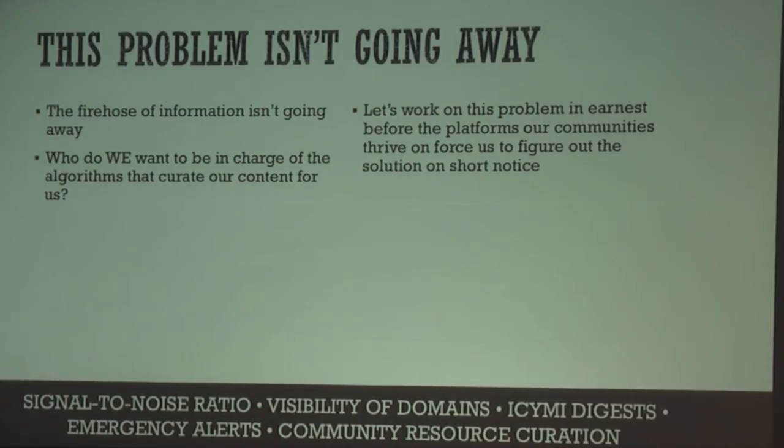Going back to the signal-to-noise thread that unites all those problems: this firehose of information problem isn't going away — in fact, it's just going to keep getting worse. And who do we want to be in charge of the algorithms that curate our content? The content's going to be curated in some way. Do we want it to be our community, or do we want to just let the companies monetizing our communities — whose algorithms exploit our neurochemistry — be in charge of it? It's time to start learning how to defend ourselves.